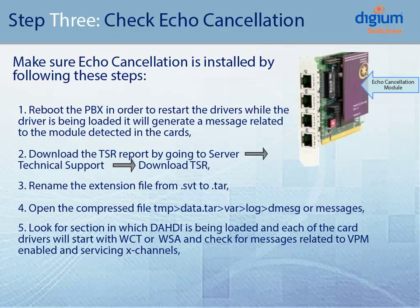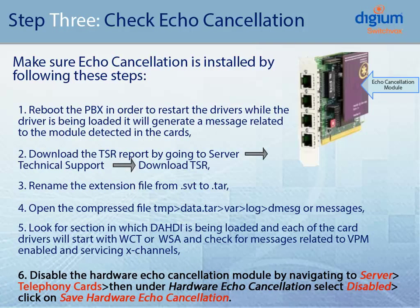Finally, you will need to disable the hardware echo cancellation module. You can do this by navigating to Server, Telephony Cards, then under the Hardware Echo Cancellation section, select Disabled, and click on Save Hardware Echo Cancellation. Keep in mind, this will restart your server and any calls will be dropped or lost.